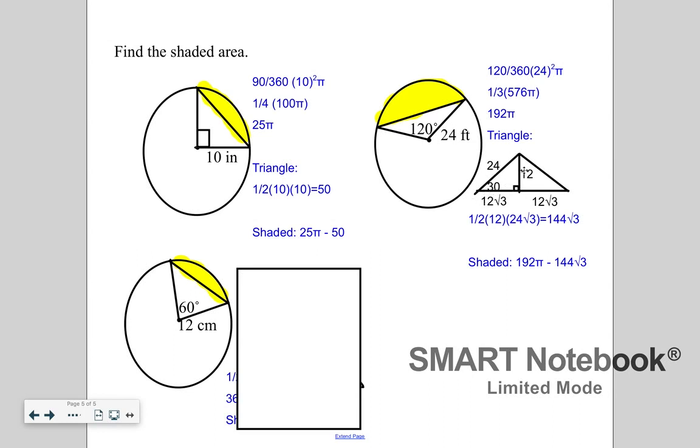That means the side across from the 30 is half of that, which is 12, and the side across from the 60 is 12 root 3. To find the area of the triangle, I'm going to do one half the height, which is 12, times the base, and that's this whole base here, which is 24 root 3. And then again, I subtracted the 2.